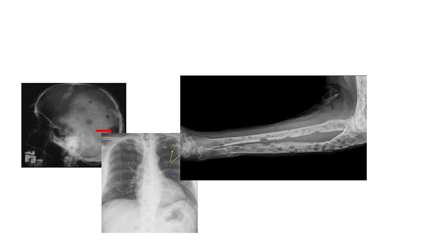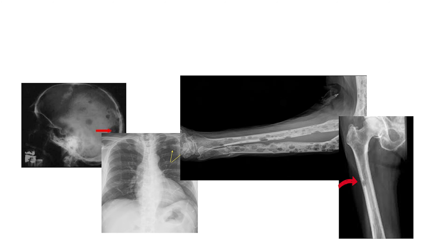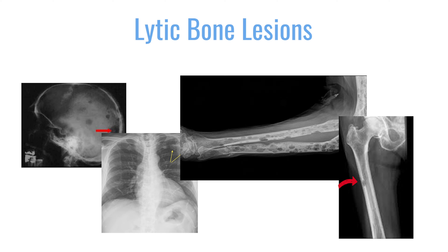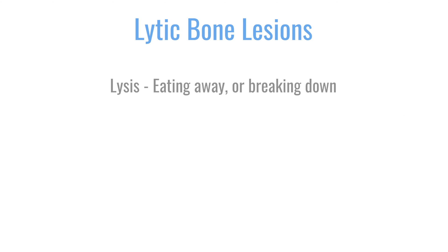When we do see evidence that the myeloma cells have caused the bone to be eaten away, those holes in the bones appear as dark spots on x-rays. We call these lytic bone lesions. Lytic comes from the Greek word for eating away — lysis, or breaking down.